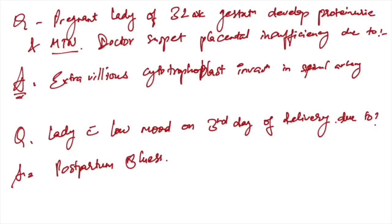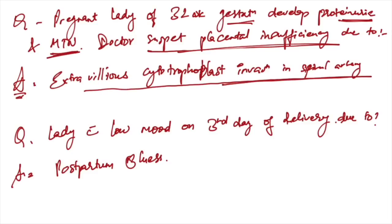Pregnant lady at 32 weeks gestation with proteinuria and hypertension, doctor suspecting placental insufficiency. It is due to extravillous cytotrophoblast invasion in the spiral artery. The main cause is extravillous cytotrophic invasion in the spiral artery at 32 weeks gestation. If there is no invasion, then it is placenta previa.